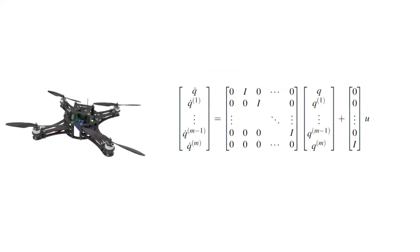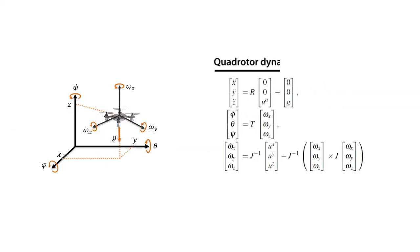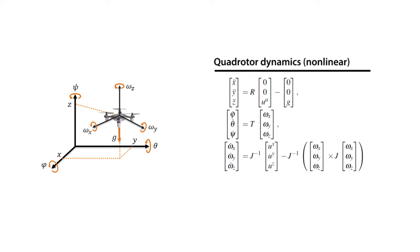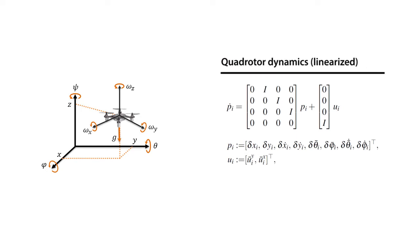Our control strategy can be extended to agents with higher-order dynamics in the controllable canonical form. Through approximation or coordinate transformation techniques such as feedback linearization, dynamics of many vehicles can be expressed in this form. Therefore, our strategy encompasses a large class of systems.